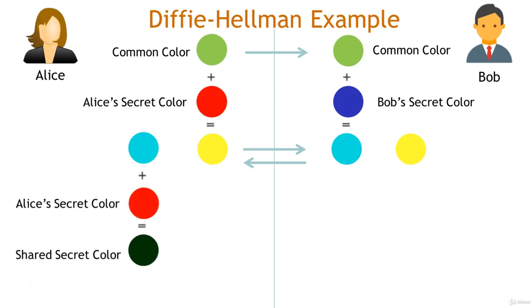For Alice, she mixes cyan and red to get teal. For Bob, he mixes yellow and blue to get teal. Both of these teals are identical and were created by mixing together the same three colors: green, red, and blue.